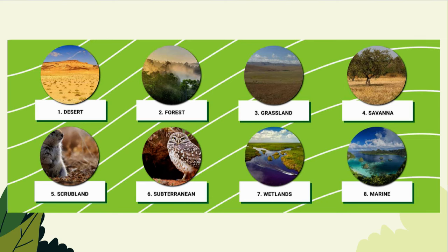Think of a habitat as just the dwelling place of an organism at a specific point in time. Habitats like the Everglades, redwood forests, and coral reefs are very large, and large animals such as the Florida panther, black bears, and sharks might roam through these areas and into other ecosystems. Habitats may see different animals at different points in time due to migration patterns.